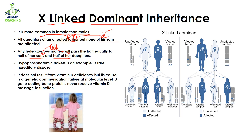Here we can see an X-linked dominant trait. Dominant means it is going to dominate and not let the other gene express. We have an affected mother with a change in the X chromosome, while the father is unaffected with no change in his X chromosome. In the next progeny, this X chromosome is transferred to the affected daughter, who has capital X and capital X.